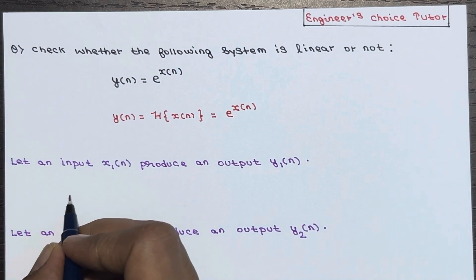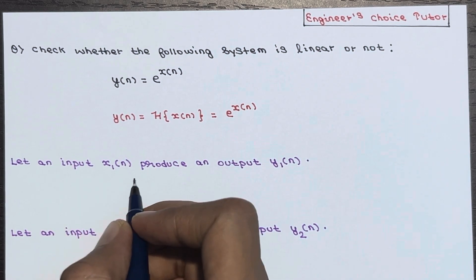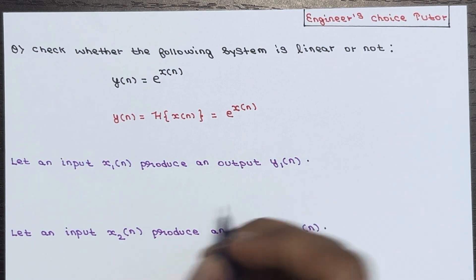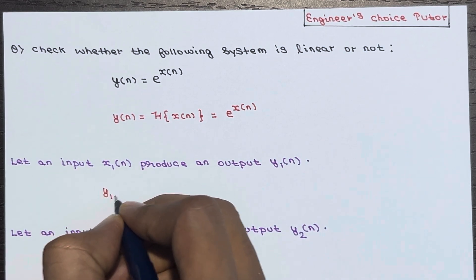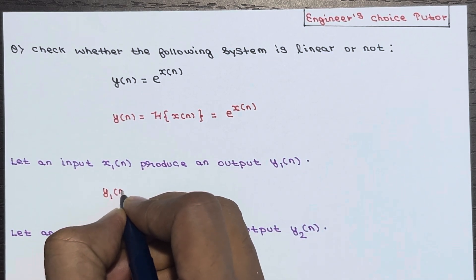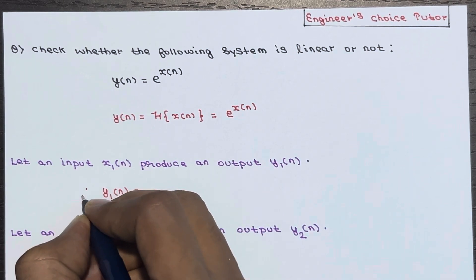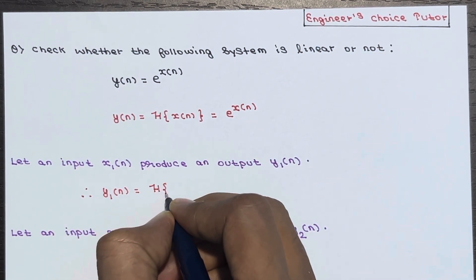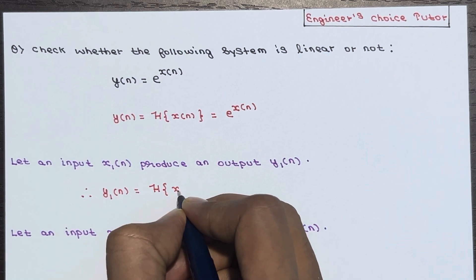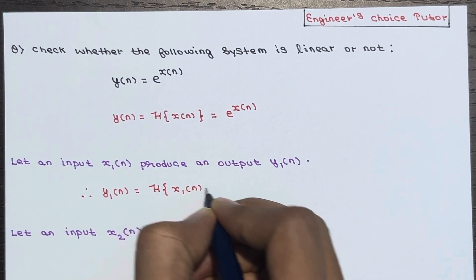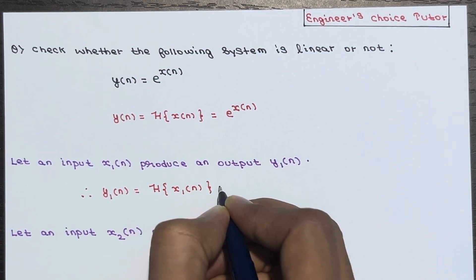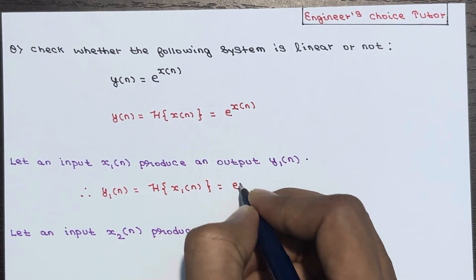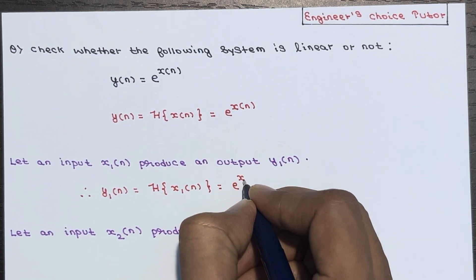Let an input x1(n) produce an output y1(n). It means y1(n) is equal to the transform of x1(n), which is equal to e to the power x1(n).